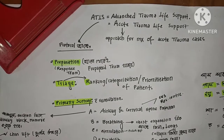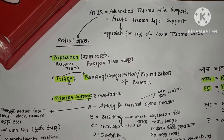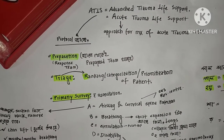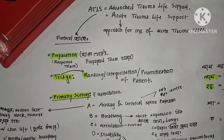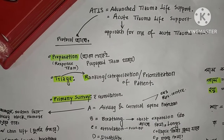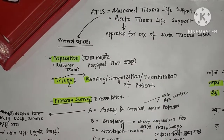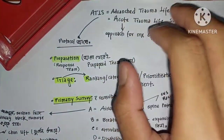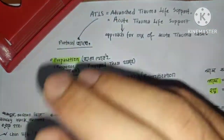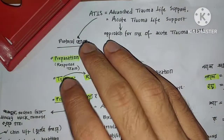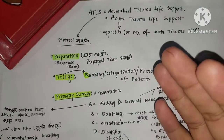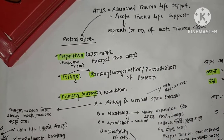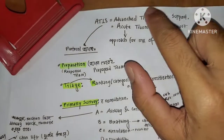Another important thing is that when a patient comes with trauma, mass casualty, or an accident, human beings need to be provided proper facilities. Without a guideline, a haphazard situation will occur. This guideline is called ATLS — Advanced Trauma Life Support Guidelines — which is very important to follow in mass casualty scenarios.